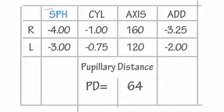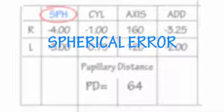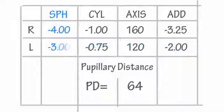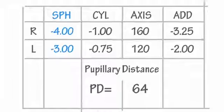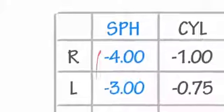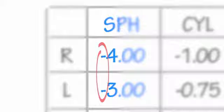Next we have SPH, which means spherical error. Don't be put off by the word error — all this simply means is how strong the lens needs to be to correct your vision. Below SPH, you'll see a plus sign or a negative sign followed by a number. The plus sign means you're farsighted and the negative sign means you're nearsighted.